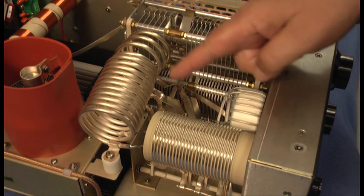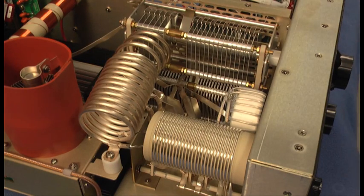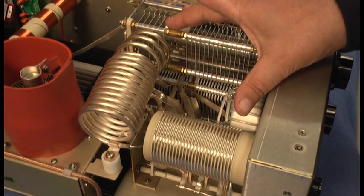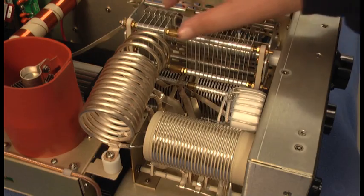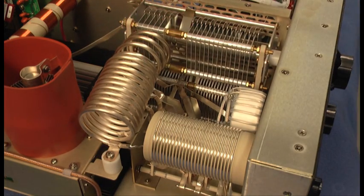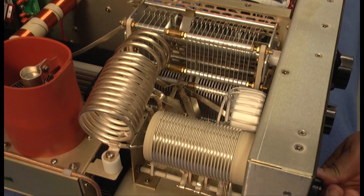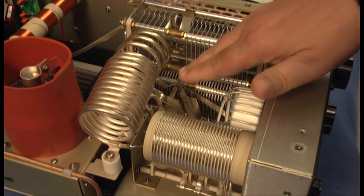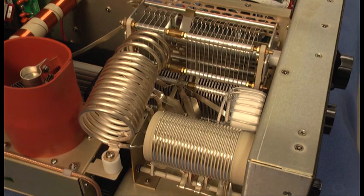The coil is the inductor part of the tank circuit. The entire coil is basically used for 160 meters and the top portion is used for 10 meters, and then portions in between for the other bands. As we move the band switch, we then select different taps on these coils to give us the appropriate amount of inductance.